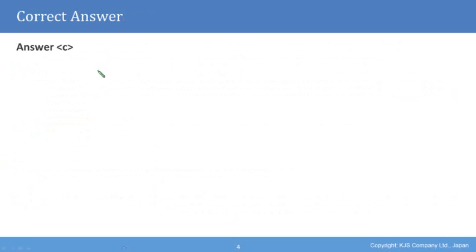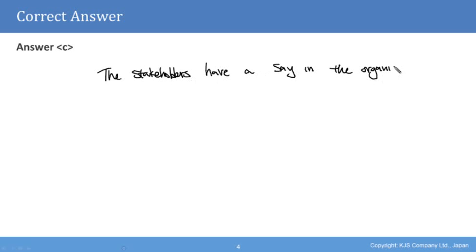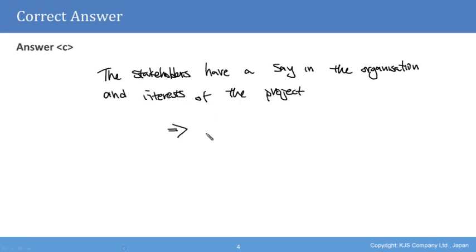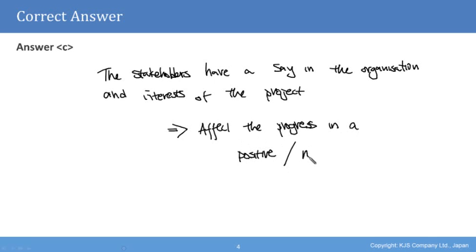The answer is Option C because stakeholders have a say in the organization and interests of the project. That means they can absolutely affect the progress of the project — not only in a positive way, but also in a negative way. It all depends on their personal interests and their organizational interests. So the answer is confirmed as Option C.